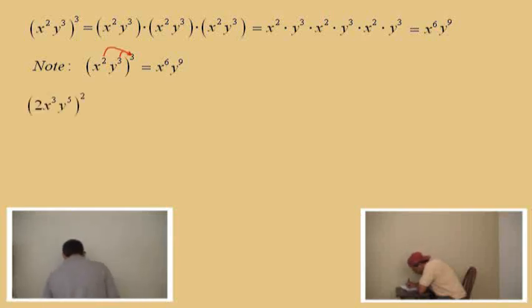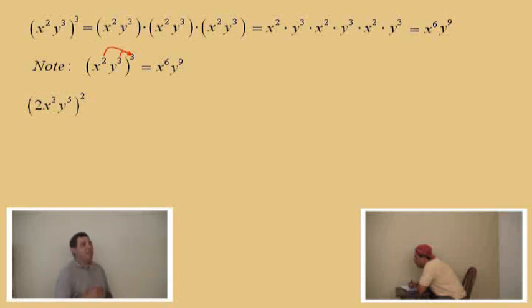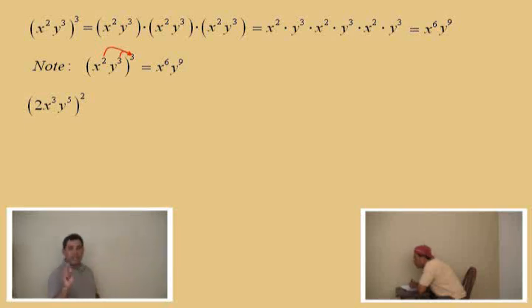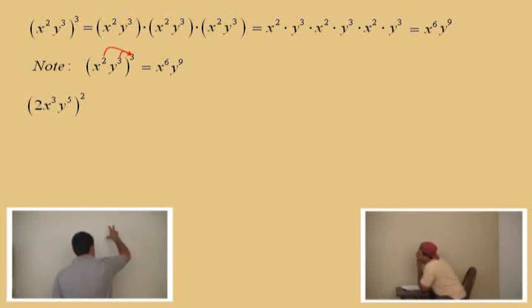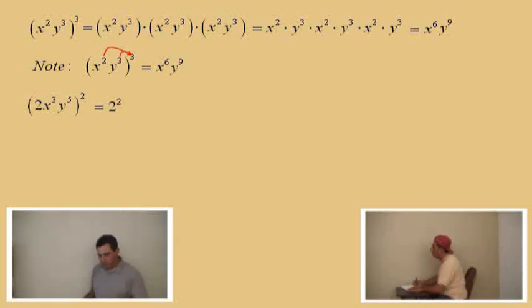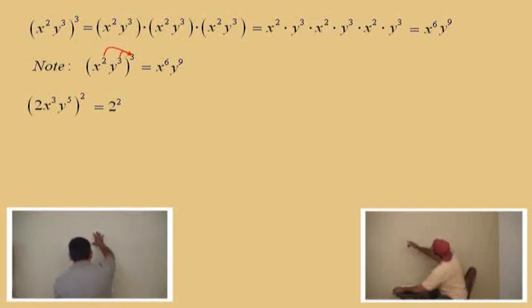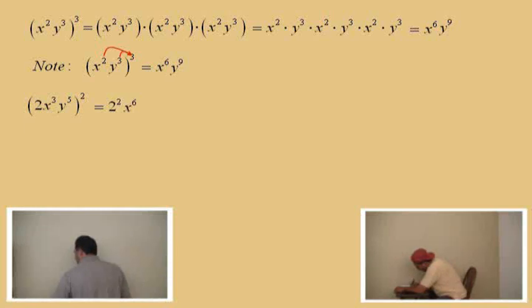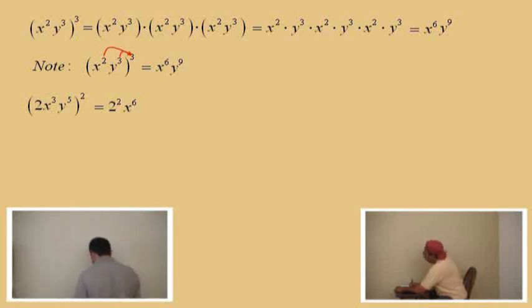Let's try another one: we have two x cubed y to the fifth, all raised to the second power. Remember, that two by itself has no written exponent, but you can write the exponent as a one — two to the first power is the same as two. When we raise it to the second power, we multiply the exponent: one times two is two, giving us two squared. X cubed raised to the second: three times two is six, giving x to the sixth. Y to the fifth raised to the second: five times two is ten, giving y to the tenth.